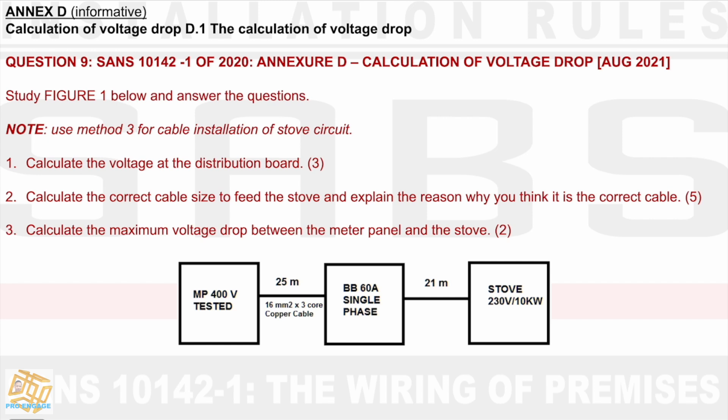That information I will get from a table or a picture or a figure given in section 6.2 — current carrying capacity of conductors — and this is where voltage drop is basically covered. That would be a table as well.